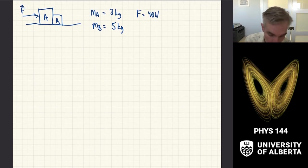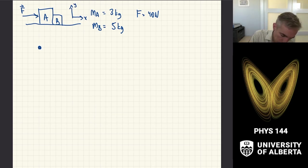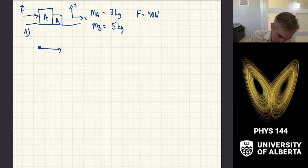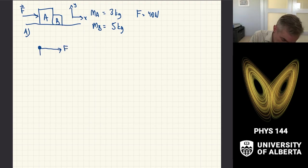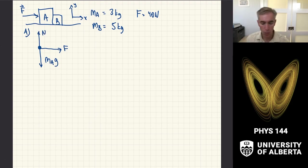With this as our setup, I first set up a coordinate system — x direction to the right, y direction upward — and then construct free body diagrams. For object A, there are several forces: the applied force F pushing it, the weight of object A (mass A times g) downward, and the normal force pushing upward from the table.